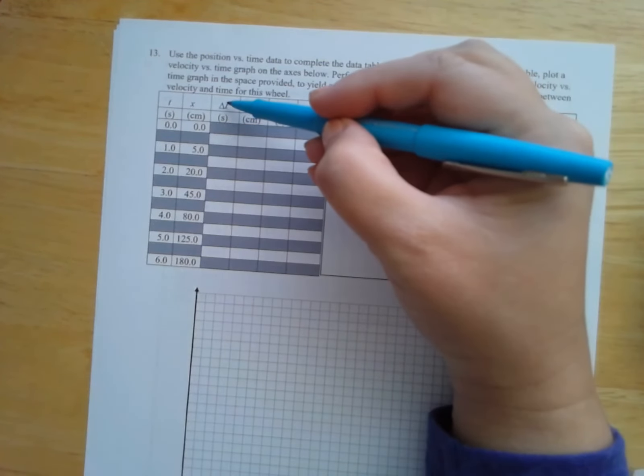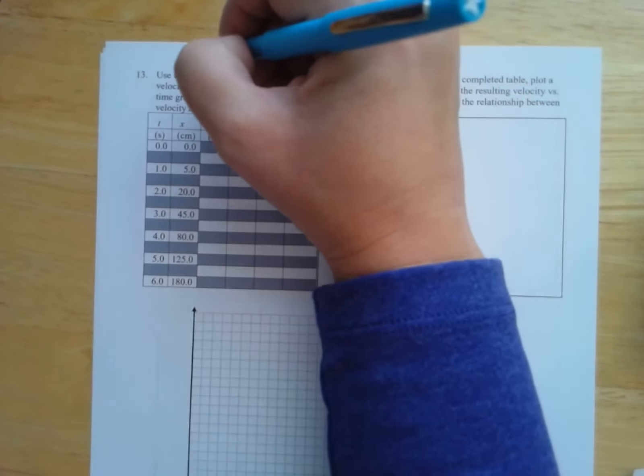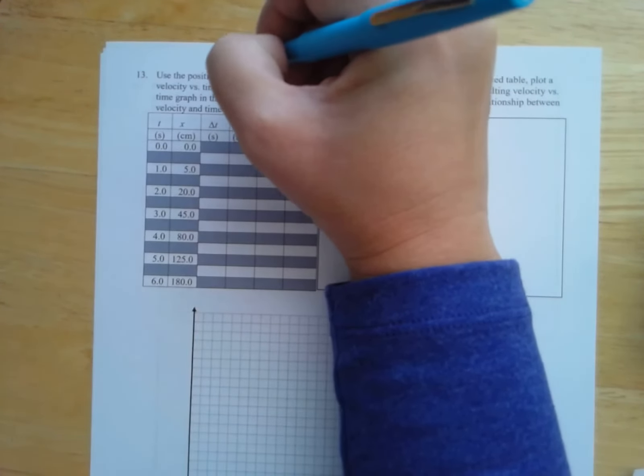So here where it says triangle T, that's delta T, delta is a Greek symbol. So delta T is going to be our final time minus our initial time.